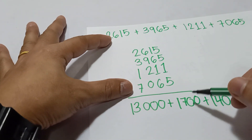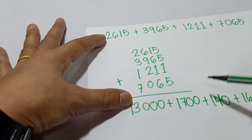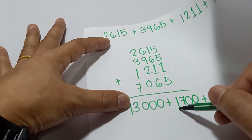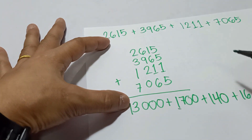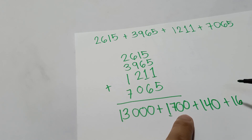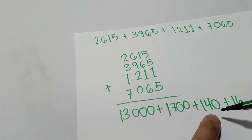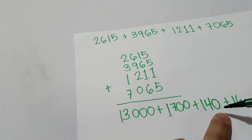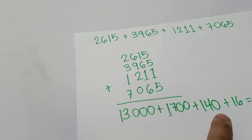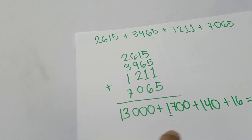Now add them all: 13000 plus 1700 is 14700, plus 140 is 14840, plus 16 is 14856. So the answer is fourteen thousand eight hundred and fifty-six.